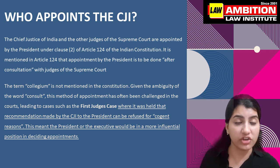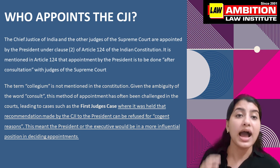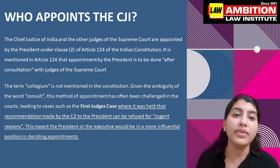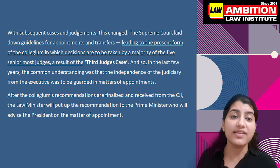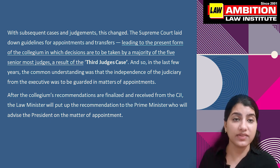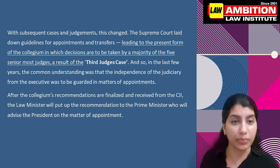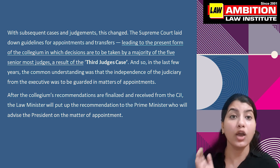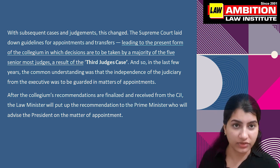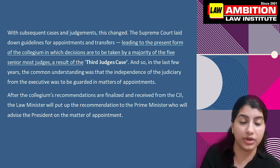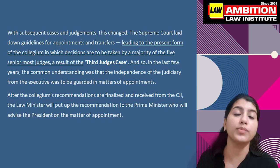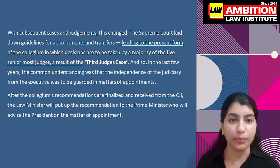Further, the disposition was changed through several cases. Ultimately, the case which established the independence of judiciary from the executive was the Third Judge Case. This case established the Collegium system. Under the Collegium system, the five senior-most judges of the Supreme Court decide who will become CJI. Their recommendation goes to the law minister, who conveys it to the prime minister, and the prime minister takes it to the president, who then appoints that person as the CJI and judges of the Supreme Court.